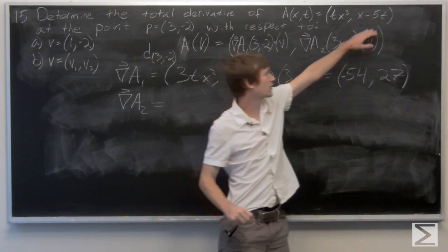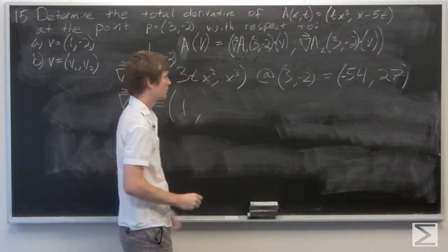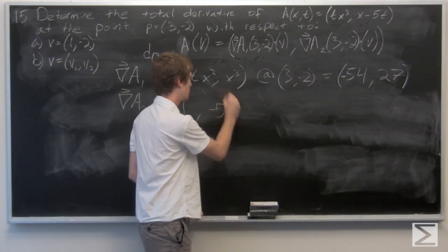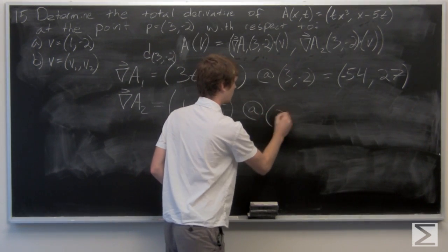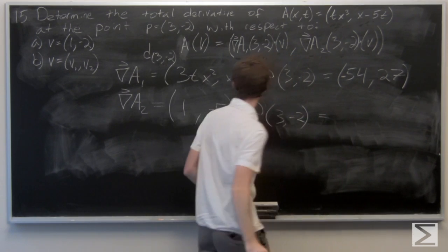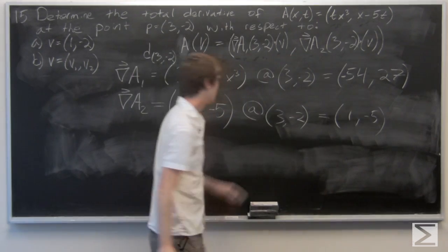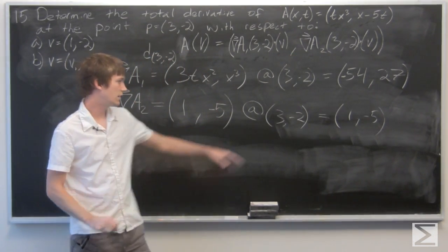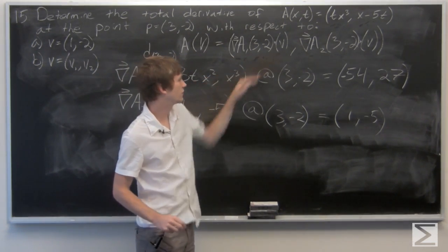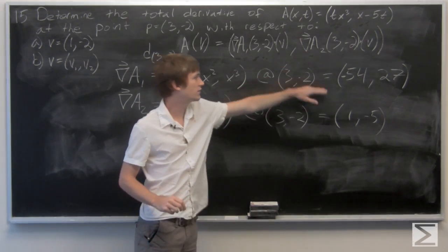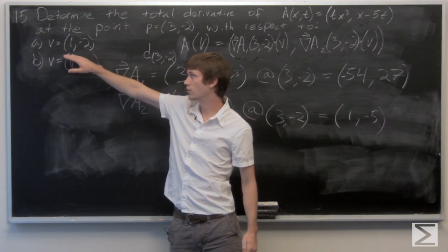Now we find the gradient vector of the second component — 1 with respect to x and negative 5 with respect to t. Since there are no x's or t's in the gradient vector, evaluating at (3, negative 2) gives the same gradient vector. Now we want to find the dot product of each of these with respect to, for part a, the vector (1, negative 2).